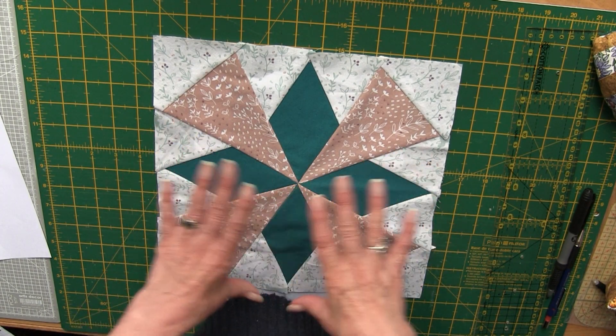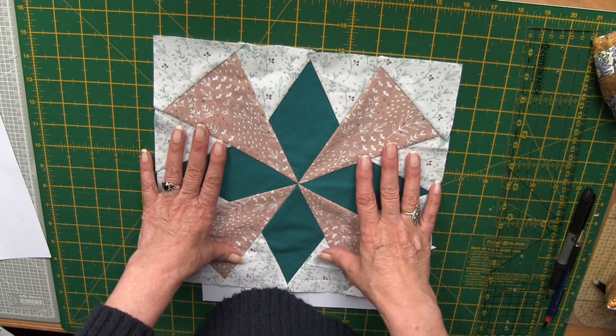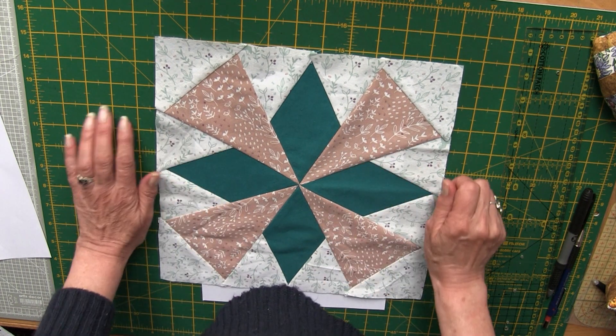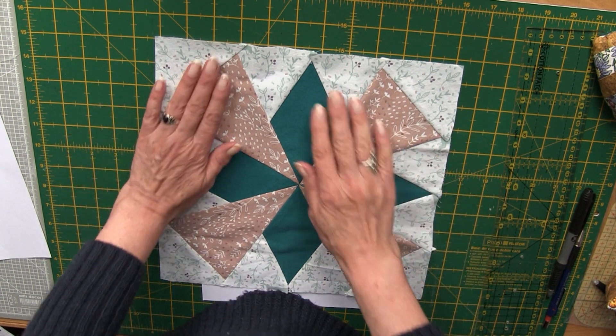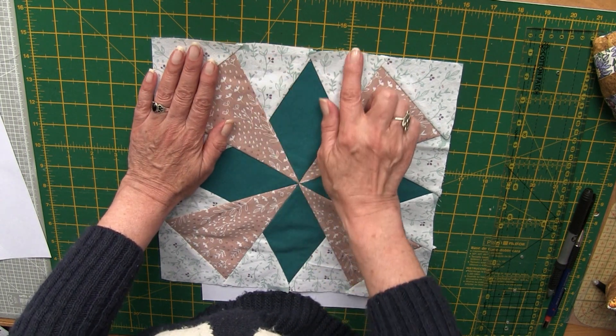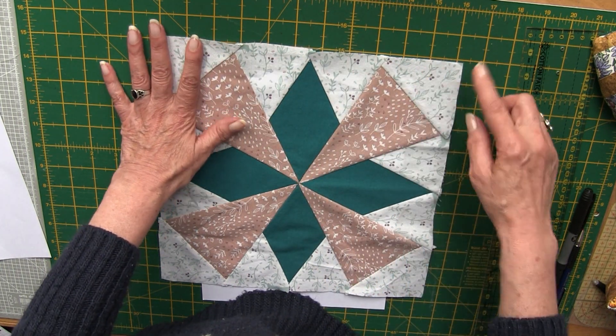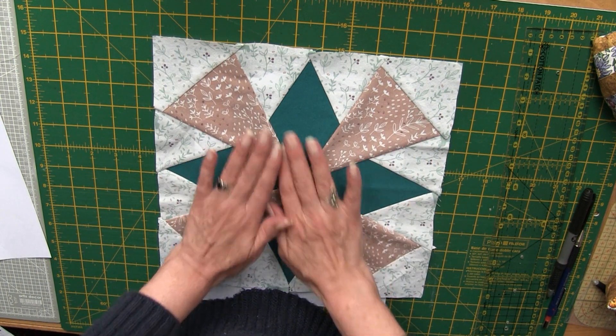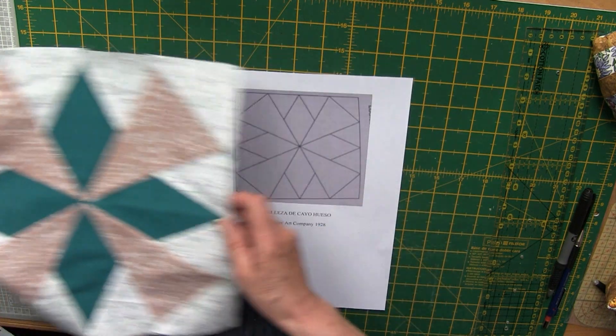Para hacer este bloque a la medida que necesitemos, tenemos que estudiar un poquito el bloque. Vemos que está dividido en 1, 2, 3, 4 partes. Y de aquí lo mismo, 1, 2, 3, 4. Siempre es igual porque son cuadrados, tienen los mismos por un lado que por el otro.